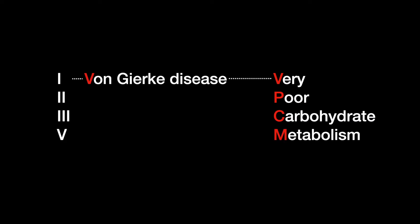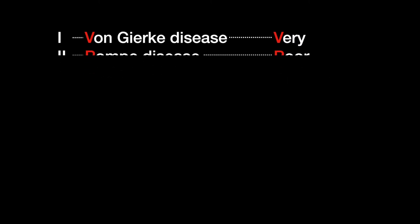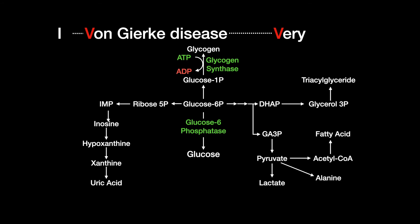Von Gierke disease is a type 1 glycogen storage disease. It is caused by a deficiency of glucose-6-phosphatase, the enzyme responsible for the final step of gluconeogenesis — cleaving the phosphate group of glucose-6-phosphate, generating free glucose, which can then be transported out of the cell.